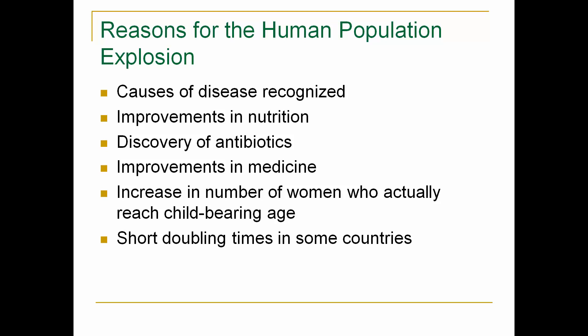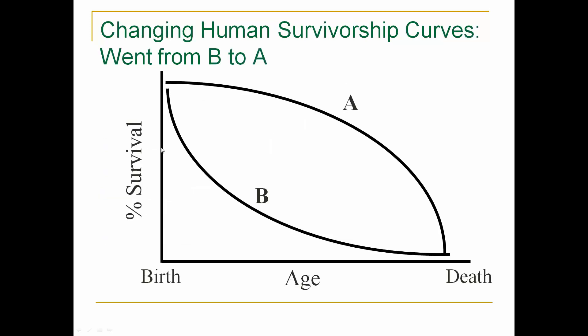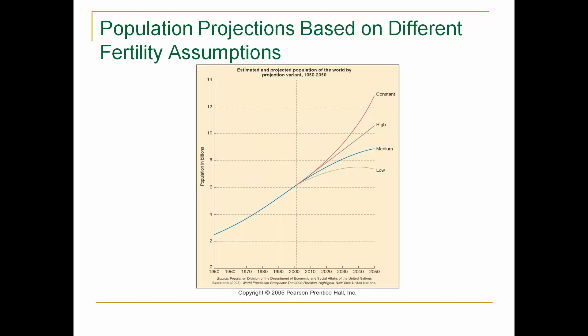Reasons for our increased growth include recognition of disease causes, improved nutrition, discovery of antibiotics, improvements in medicine, an increase in the number of women who reach childbearing age, and short doubling time. Human survivorship curves used to look very different pre-1700 — now people live much longer and give birth to more children. Projections from 2005 hoped population would stop at a certain level, but if constant with today's growth rate, it could exceed 12 billion, which experts believe the world cannot hold.